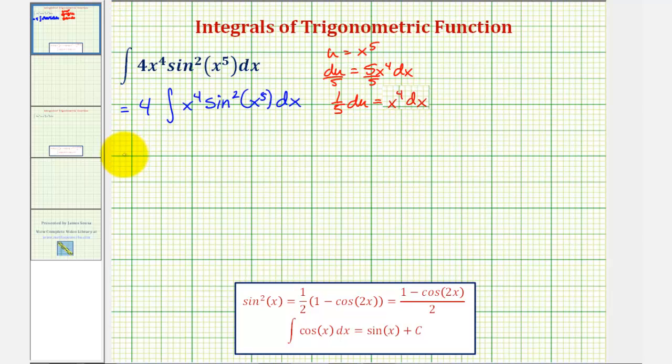So writing in terms of u, we'd have four times the integral of x to the fourth dx, which equals one-fifth du. Let's factor out the one-fifth, and then we have differential u. And x to the fifth is equal to u, so we have the integral of sine squared u.